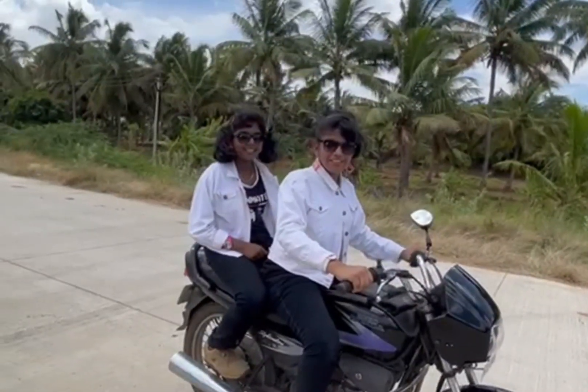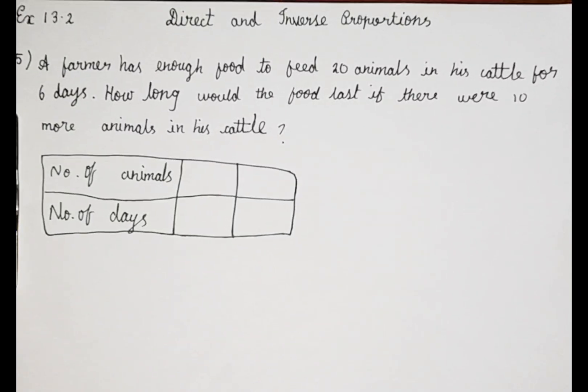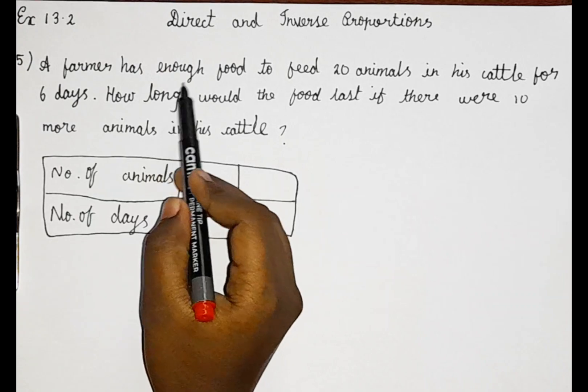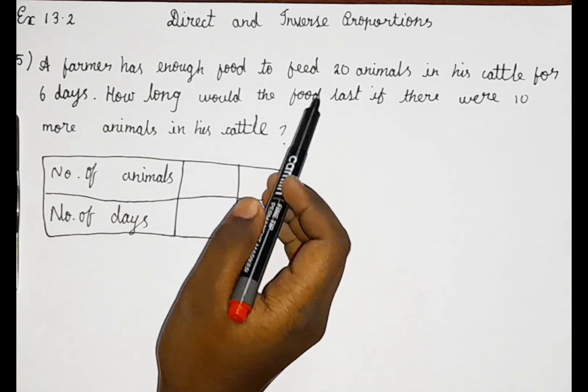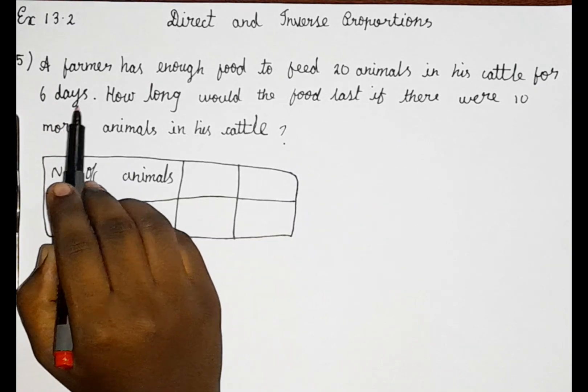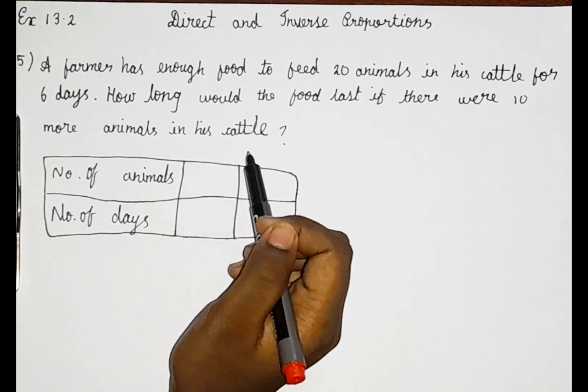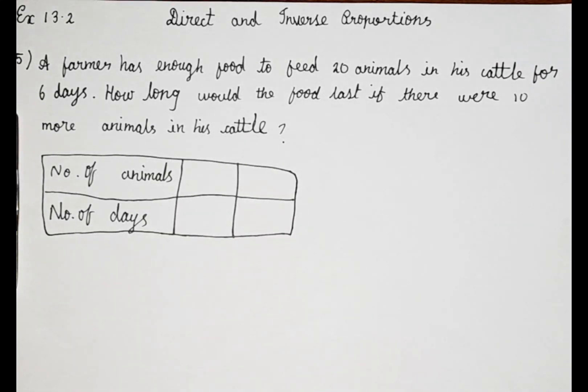Alright guys, now let's get into the video. Let's read the question. A farmer has enough food to feed 20 animals in his cattle for 6 days. How long would the food last if there were 10 more animals in his cattle?